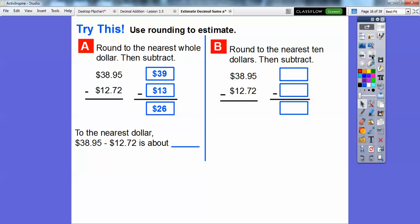So to the nearest dollar, $38.95 minus $12.72 is about $26. Let's round over here, same numbers.